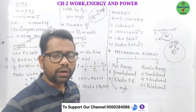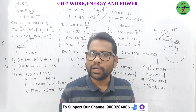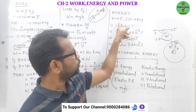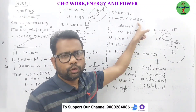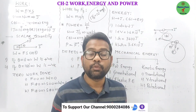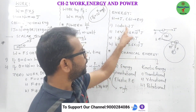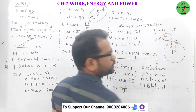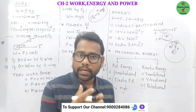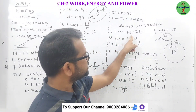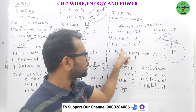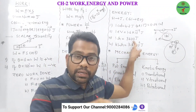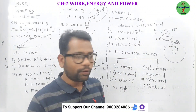Energy is the ability to do work — more energy means more work can be performed. Its SI unit is joule and CGS unit is erg; one joule equals 10 power 7 erg. Energy exists in different forms. To measure heat energy, we use calories: one calorie equals 4.2 joules, or one joule equals 0.24 calories. The electron volt is used to measure energy of subatomic particles: one electron volt equals 1.6 × 10⁻¹⁹ joules. For electrical energy, one watt-hour equals 3600 joules and one kilowatt-hour equals 3.6 × 10⁶ joules.